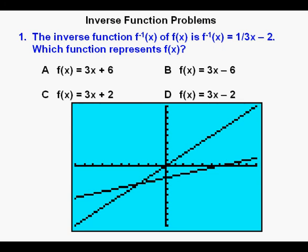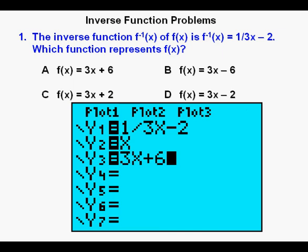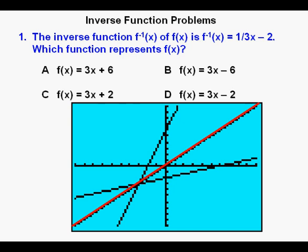I'll now trace y = x in red to get a better look at the line of reflection we need for an inverse function. Now we'll go back to enter answer A, y = 3x + 6 in y3. Now we'll graph the three functions. This one looks pretty good.